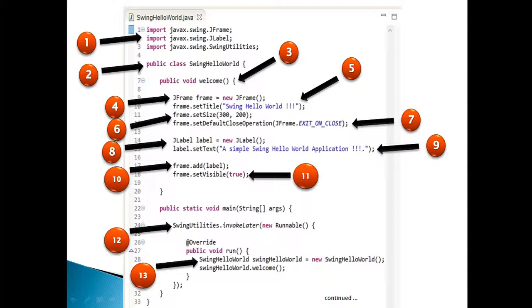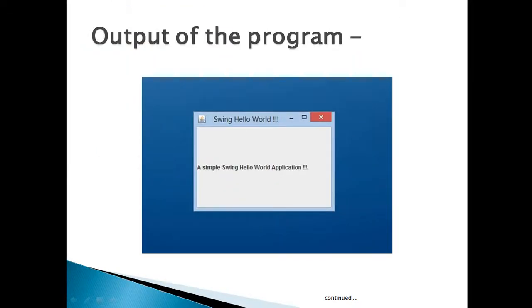Moving ahead, let's run the program. GUI is displayed with a frame and a label to it. So friends, go through this video 2-3 times so that how to create a simple swing application in Java concept gets more clear to you.